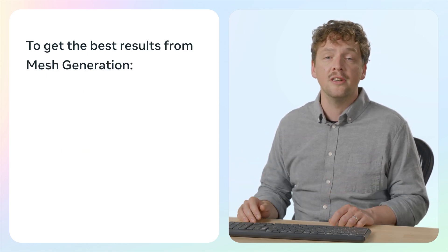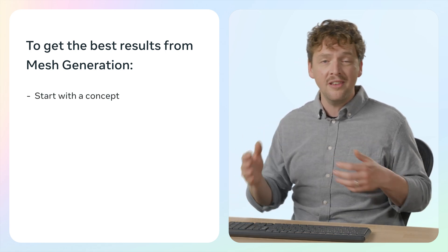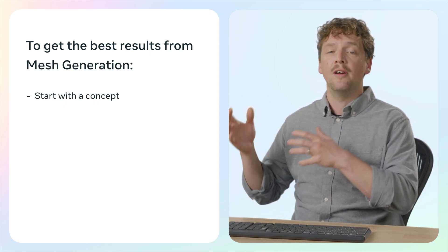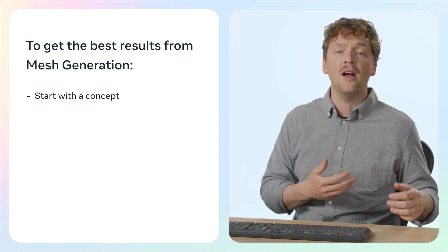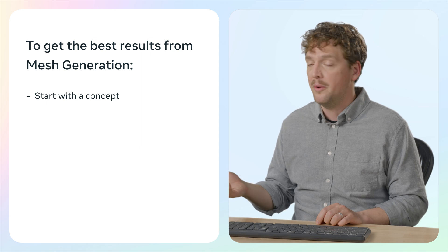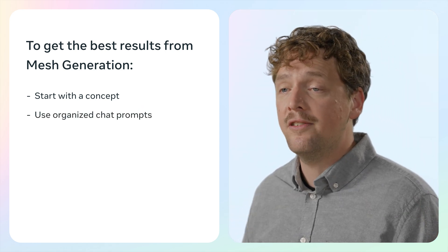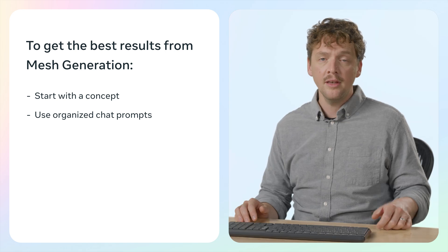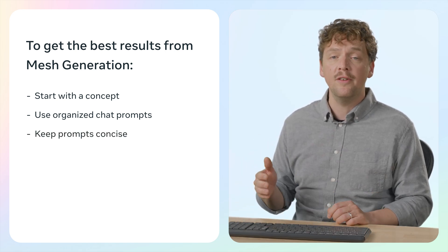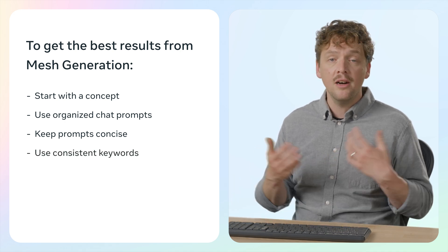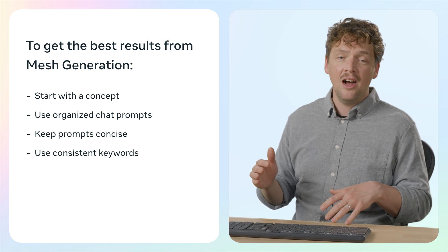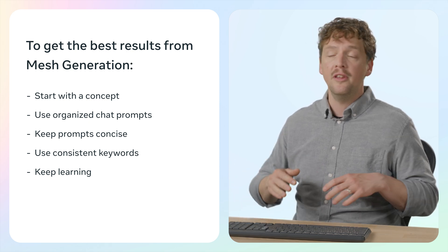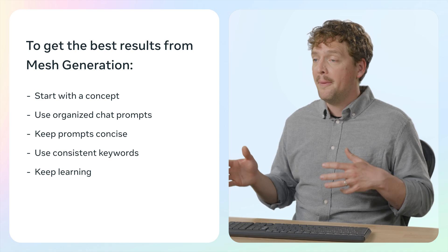To get the best results from mesh generation, I recommend you start with a concept in mind. Before using any Gen AI tool, it's a good idea to have a reference image of the scene you want to create — having one will help you stay on theme and be more specific with your prompts. Gen AI prompts are organized in chats, so if you want to generate meshes with a completely different style, start a new chat to minimize the influence of prior prompts. Keep prompts concise and only use words relevant to the asset you want to create. Use consistent keywords like 'cartoony' for consistency across different models, and I recommend continuing to practice skills in tools like Blender to further optimize and customize your AI meshes.